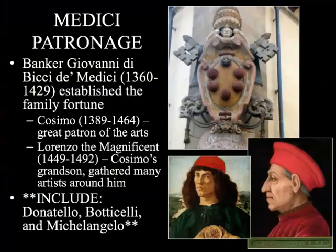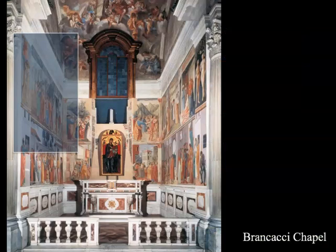When we talk about the Italian Renaissance, we're talking about a move back to classical images from Greece and Rome, as well as humanism and movement toward a more democratic government. You also have the Medici patronage, which is a big part of the Italian Renaissance in Florence where most of this work is being produced. Giovanni di Bicci de' Medici established the family fortune, and Cosimo and Lorenzo the Magnificent became great patrons of arts — including Donatello, Botticelli, and Michelangelo, who was basically adopted by the Medici family.